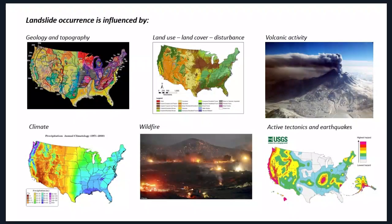Geography, geology, and topography play a big role in landslide occurrence, although even places with modest topography can have landslide problems. Climate plays a big role — the USGS focuses a lot on rainfall-driven landslides. Even arid places in the Intermountain West, like Colorado, can have landslide problems due to heavy rainfall from severe thunderstorms. Land use and land cover disturbance — including timber harvest, agriculture, and urbanization — also play big roles.